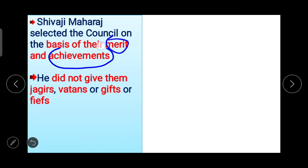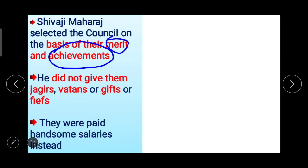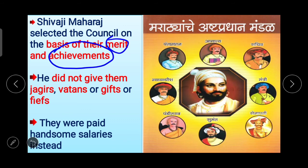There was no discrimination while selecting the council. He did not give ministers Jagirs, Vatans, or gifts and bribes, because such things might lead ministers to exploit the common people. Instead, they were paid handsome salaries — this was something new in that era, that Shivaji Maharaj started giving handsome salaries directly to ministers.